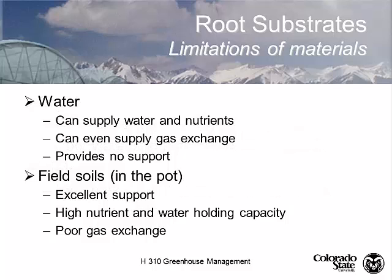It's important to find a good balance between the two. In greenhouse production, we often use water as a substrate. Water provides water, and we can put nutrients in the water. We can even supply gas exchange by bubbling air into it — you can provide plenty of oxygen just by aerating the water. But water provides no physical support, so no anchorage. We'd have to add some kind of trellising system to support the plants.